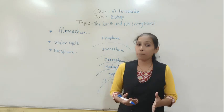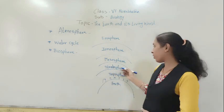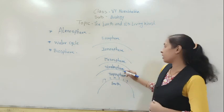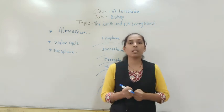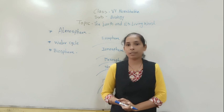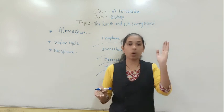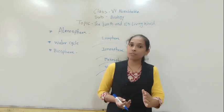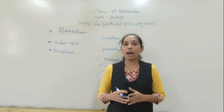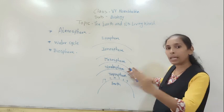Now the next layer of the atmosphere is the Stratosphere. The stratosphere is very important because in it there is a layer of gas called ozone gas. This ozone gas helps us by absorbing the ultraviolet rays coming from the sun, and it avoids the entry of those UV rays onto the earth. If there were no ozone gas, all UV rays would reach the earth's surface and cause skin cancer, different skin diseases, and harm to our eyes.